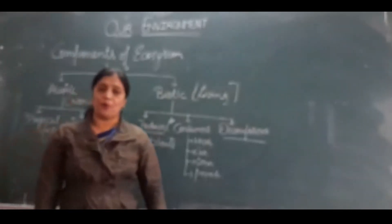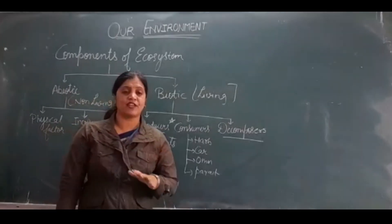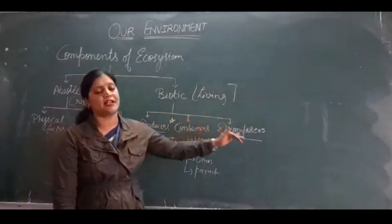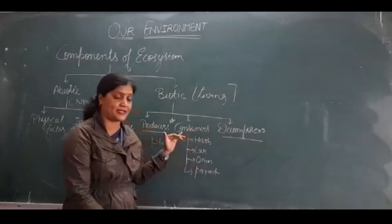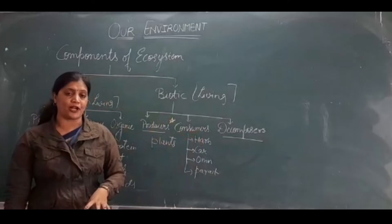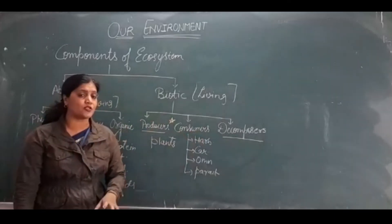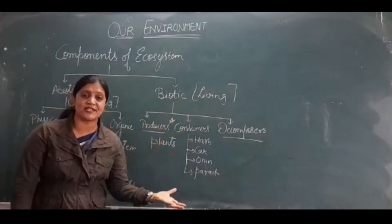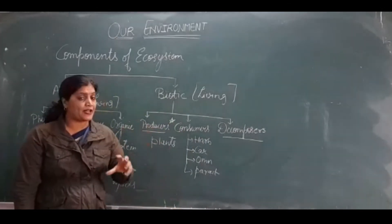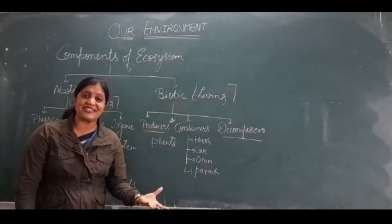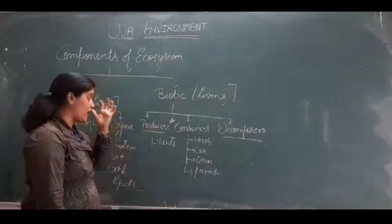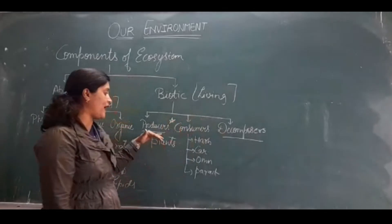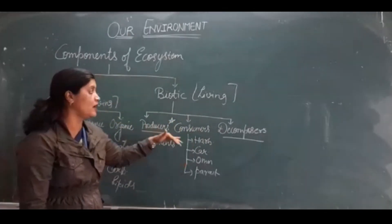Next is biotic components, in which all the living things will come. In biotic components, producers, consumers, and decomposers are categorized. This is a very important question for your board exam — explain all the biotic components of ecosystem in detail. So what are the three biotic components? Producers, consumers, and decomposers.